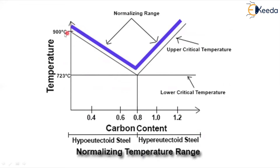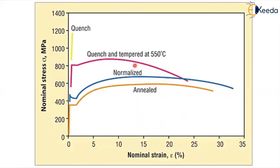After the material reaches the upper critical temperature, maintain 25 to 50 degrees above it — that is the main technique followed in normalizing steel. Observing the stress versus strain graph, the quenched condition shows more stress, and quench-and-tempered condition shows more stress and strain compared to the normalizing process.